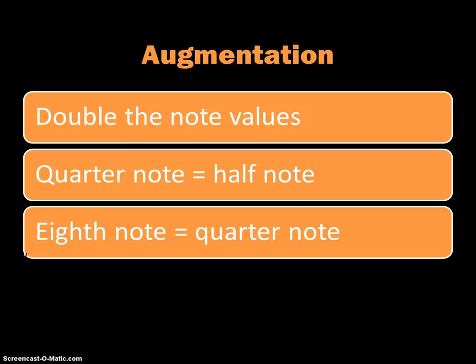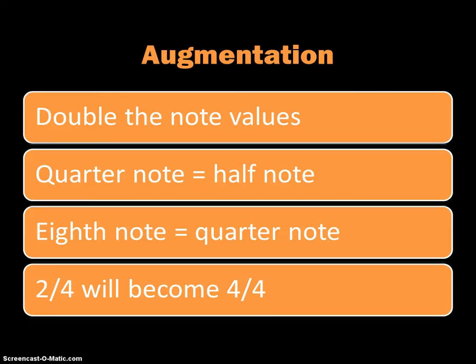Or if you've got an eighth note, that would be doubled up to a quarter note. You can see that the conversion is really easy if you follow the note value pyramids that we looked at in class.